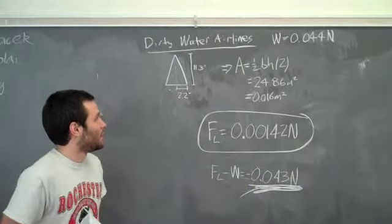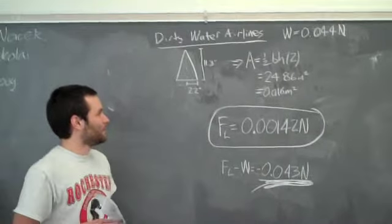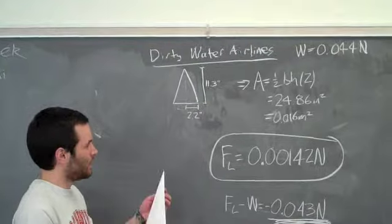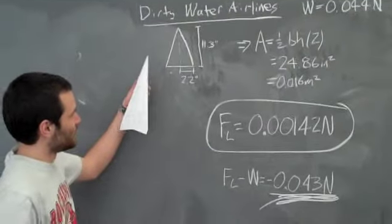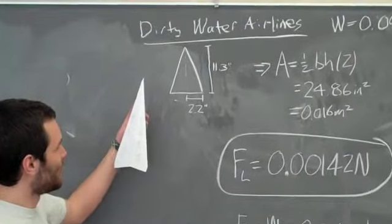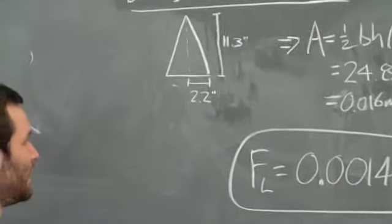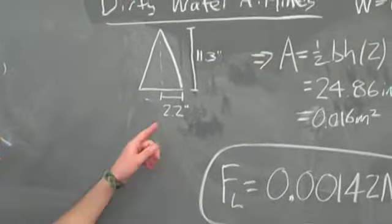In the case of UW Badger Airlines, again, we assumed a constant area for the lift force. We found a lift force, again, that was much smaller than the weight of the airplane, which again would mean that the airplane would just drop, which obviously is not the case.